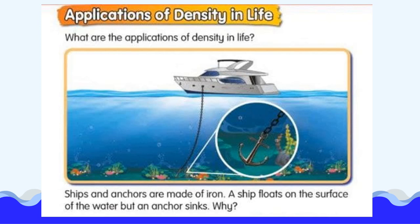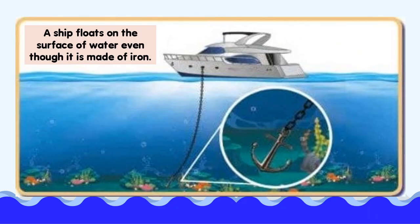Ships and anchors are made of iron. A ship floats on the surface of the water, but an anchor sinks. Why? Iron is much denser than water. So, you would think that massive iron ships would sink, right? Well, think again.